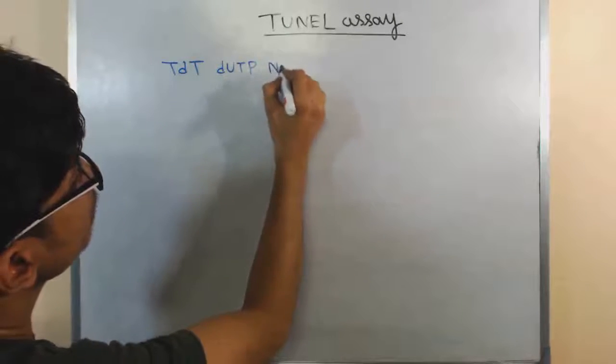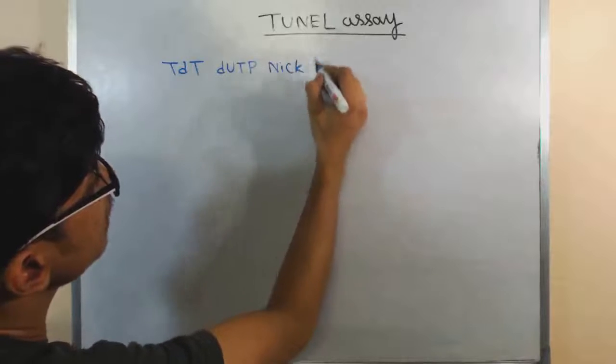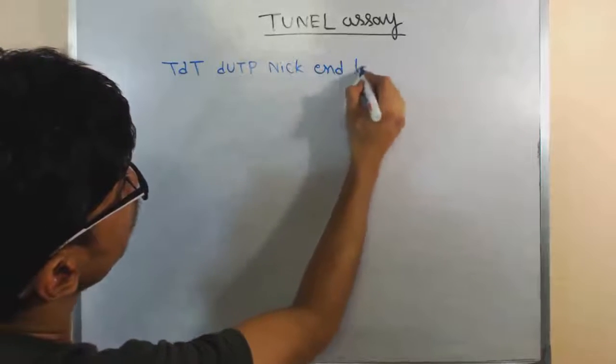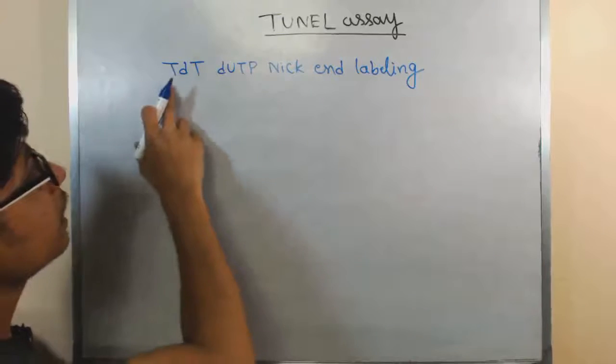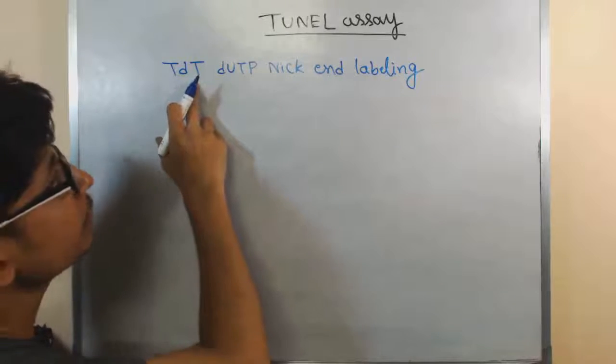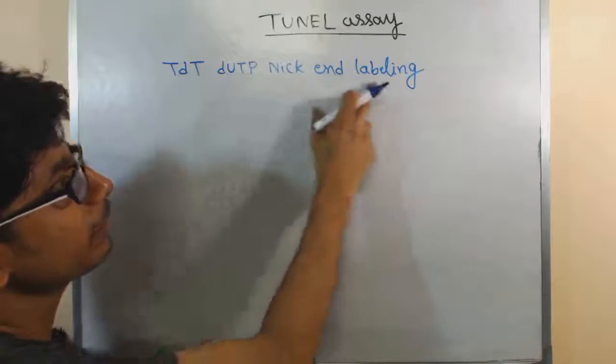N stands for NIC, E stands for END, L stands for labeling. So, terminal deoxynucleotidyl transferase dUTP NIC end labeling assay.